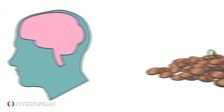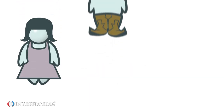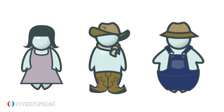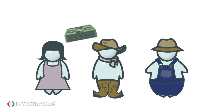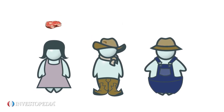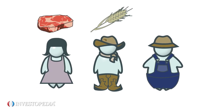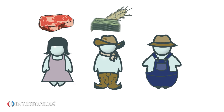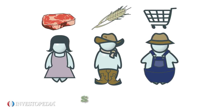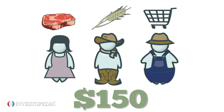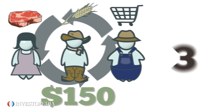To understand the concept, consider a very small and simple economy that includes only three entities: a grocer, a rancher, and a farmer. They have $50 between them, which the grocer just happens to own. The grocer pays the rancher $50 for meat she wants to sell at her store. The rancher pays the farmer $50 for some grain to feed his livestock. The farmer then pays the grocer $50 for groceries she needs to feed her family. The original $50 bought $150 worth of goods by changing hands three times. The velocity of money in this economy is three.